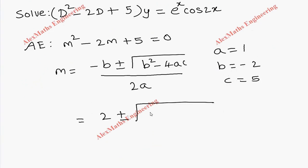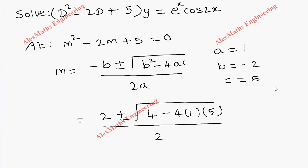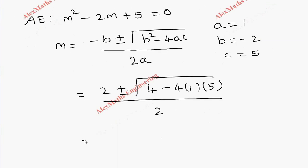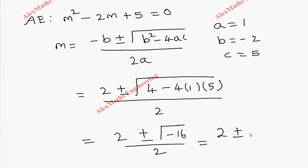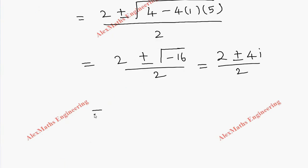On substitution we get 2 plus or minus root of 4 minus 4 times 1 times 5, whole divided by 2. In the numerator we get 4 minus 20, so root of minus 16, whole divided by 2. This becomes 2 plus or minus 4i divided by 2. Dividing individually by 2, we get 1 plus or minus 2i.